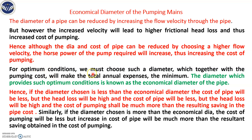The optimum diameter should be one where together the pumping cost and the annual maintenance expenditure are minimum. So the diameter being provided should be at such an optimal condition that you have the least expenditure. That is called the economical diameter of the pipe — the diameter at which pumping cost and total annual expenditure cost is minimum.